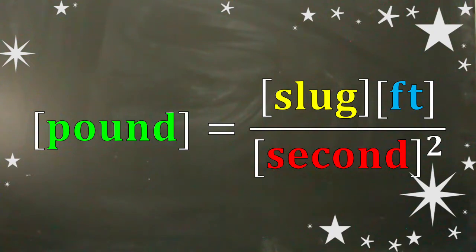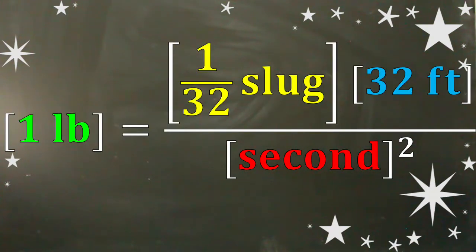For the standard system, the units for distance, time, mass, and force is the foot, second, slug, and pound. Such that one pound on earth is 1/32 of a slug multiplied by the 32 feet per second squared acceleration due to gravity.